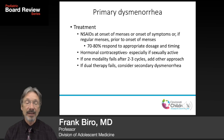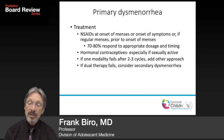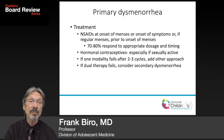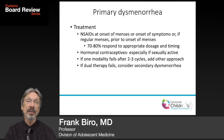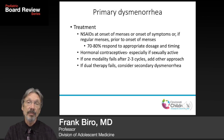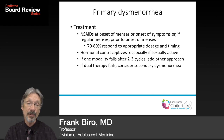For management of primary dysmenorrhea, NSAIDs are effective. You need to start them at the time of menses or with the first symptoms, because you want to block the production of prostaglandin F2-alpha. If started early enough, NSAIDs can actually block prostaglandin production — they are prostaglandin synthetase inhibitors — rather than just acting as analgesics.